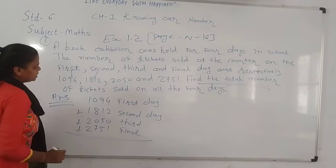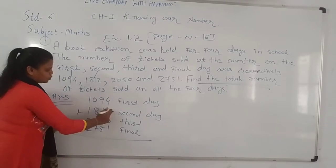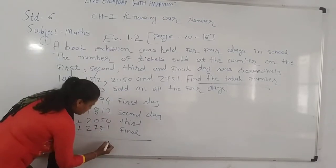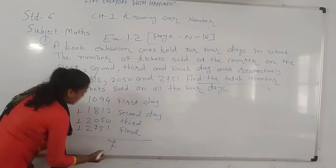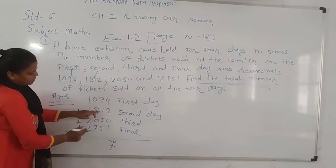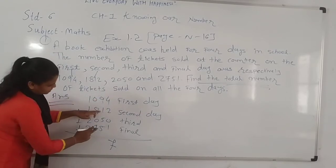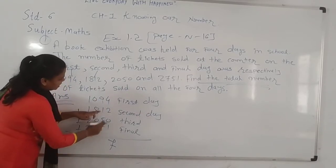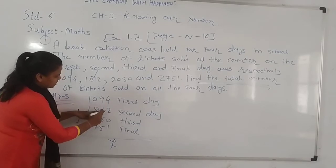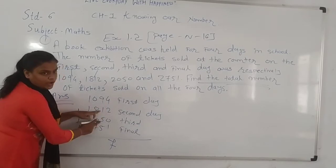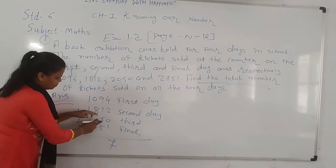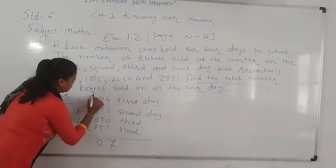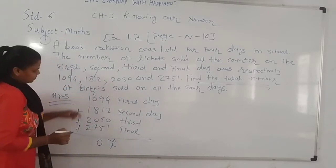Addition: 4 plus 2 is 6, plus 1 is 7, 9 plus 1 is 10, and 5 plus 1 is 6. 10 plus 1 is 10, 10 plus 1 is 15, 15 plus 5 is 20. Carry forward 2.